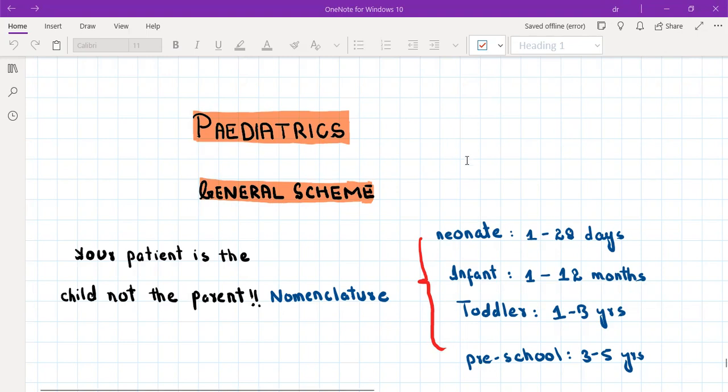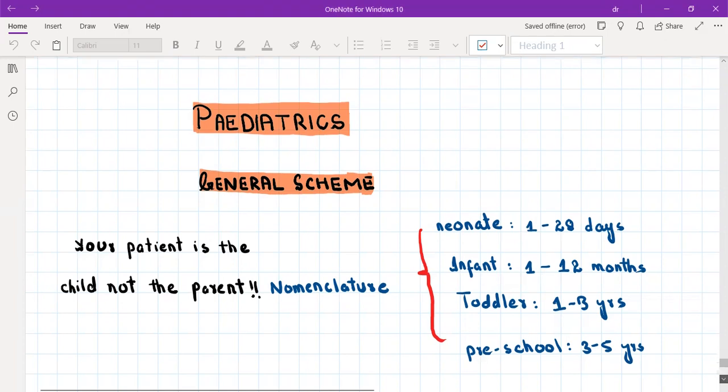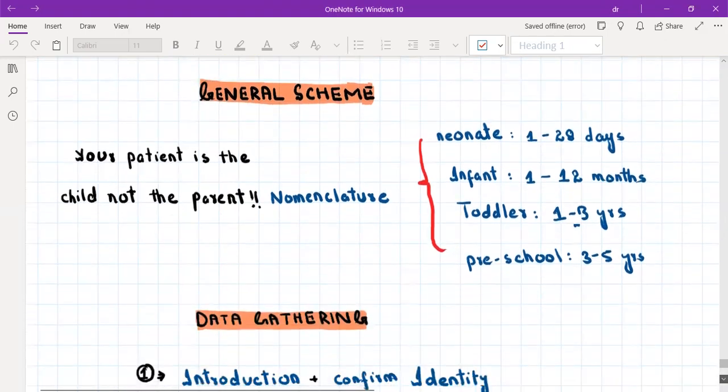Then I want to discuss a little bit of nomenclature just for your understanding. So a neonate is a child which is between one day to 28 days old. An infant is between one month to 12 months. Toddler is between one year to three years and preschooler is between three years to five years. Okay. So there was a little bit of nomenclature. And now we will discuss data gathering.